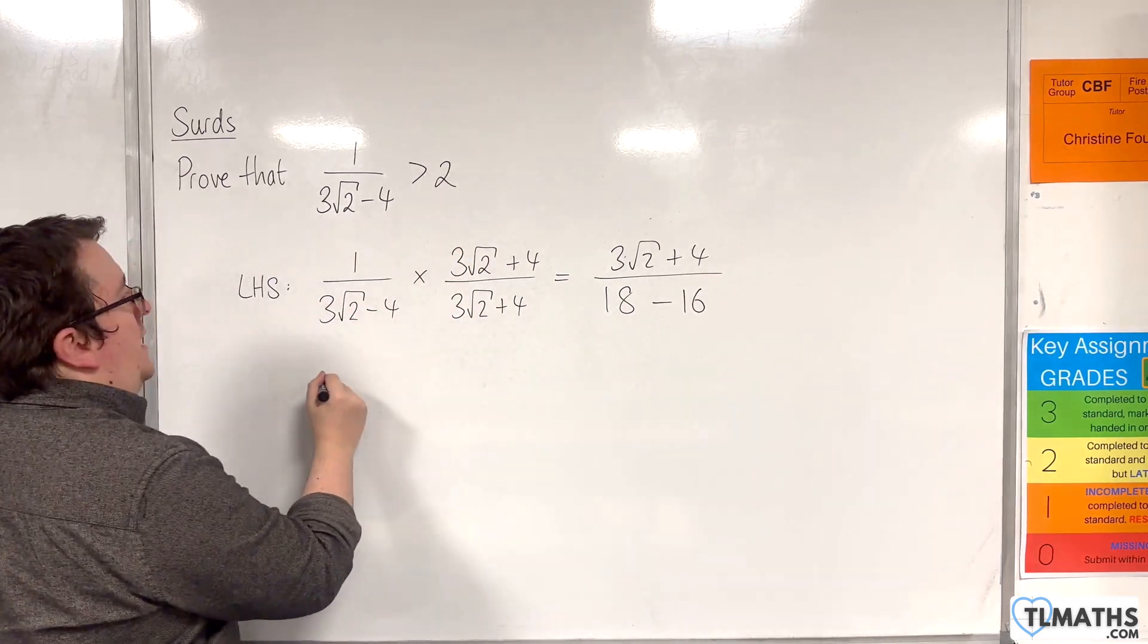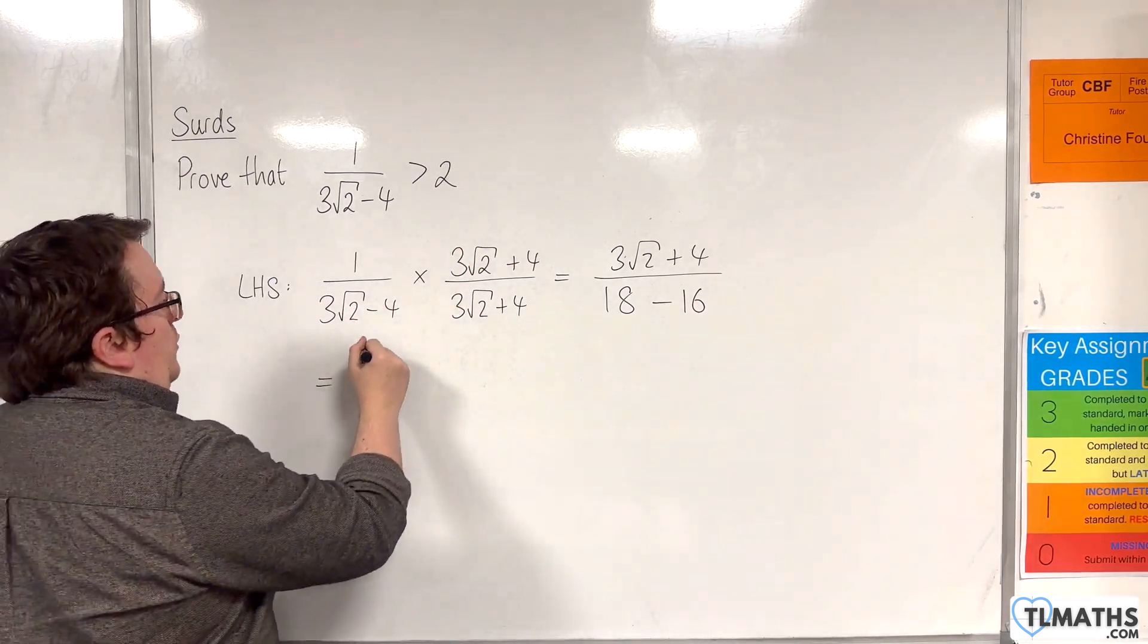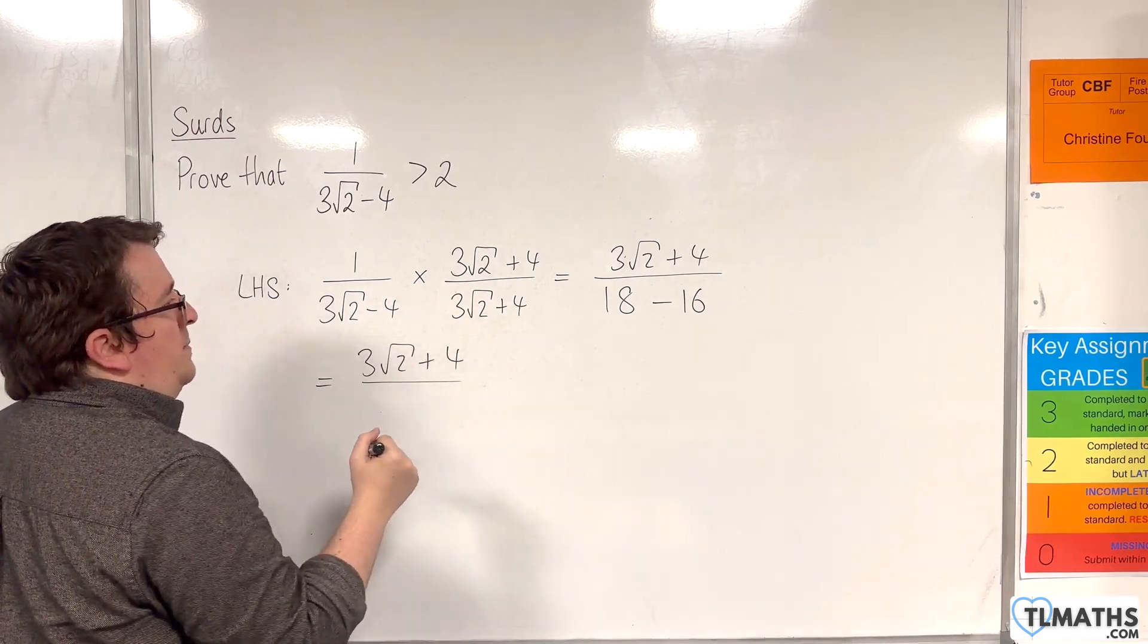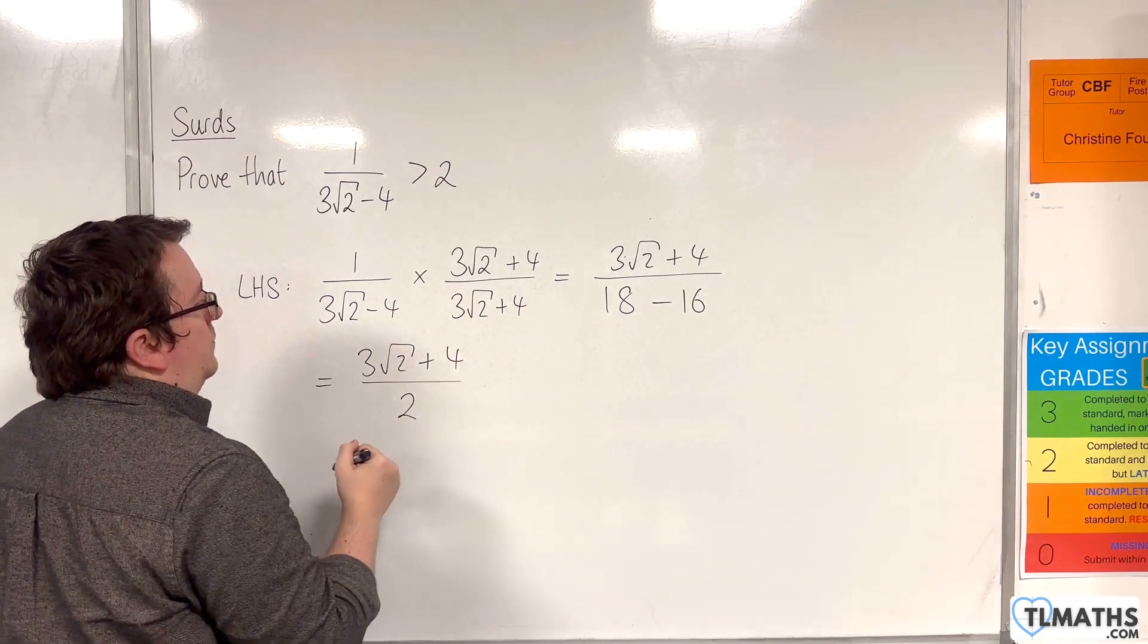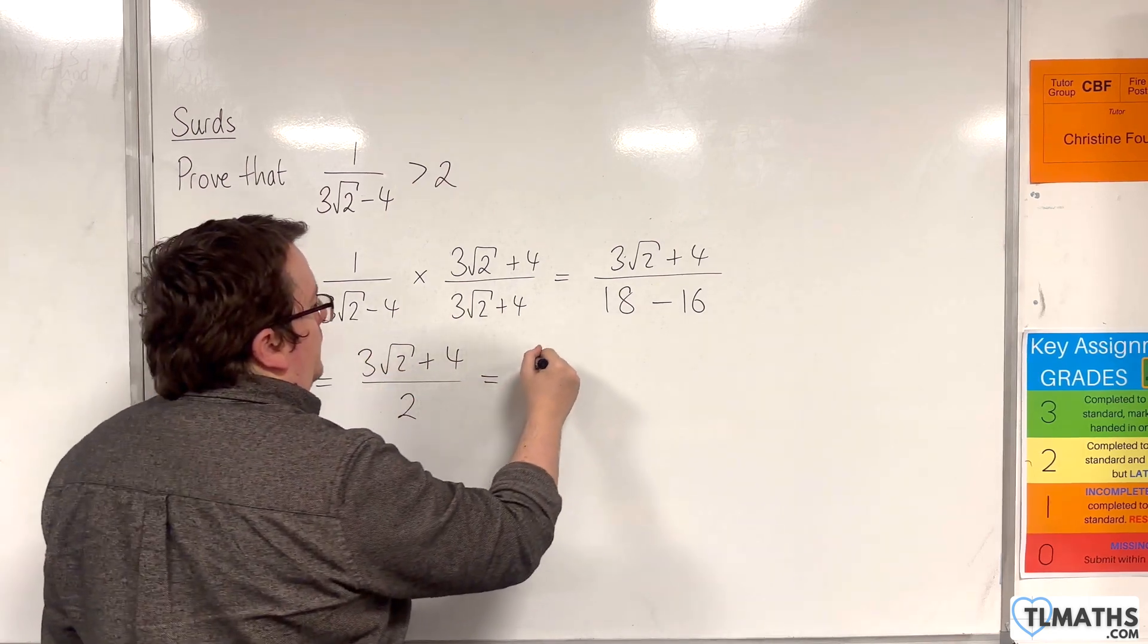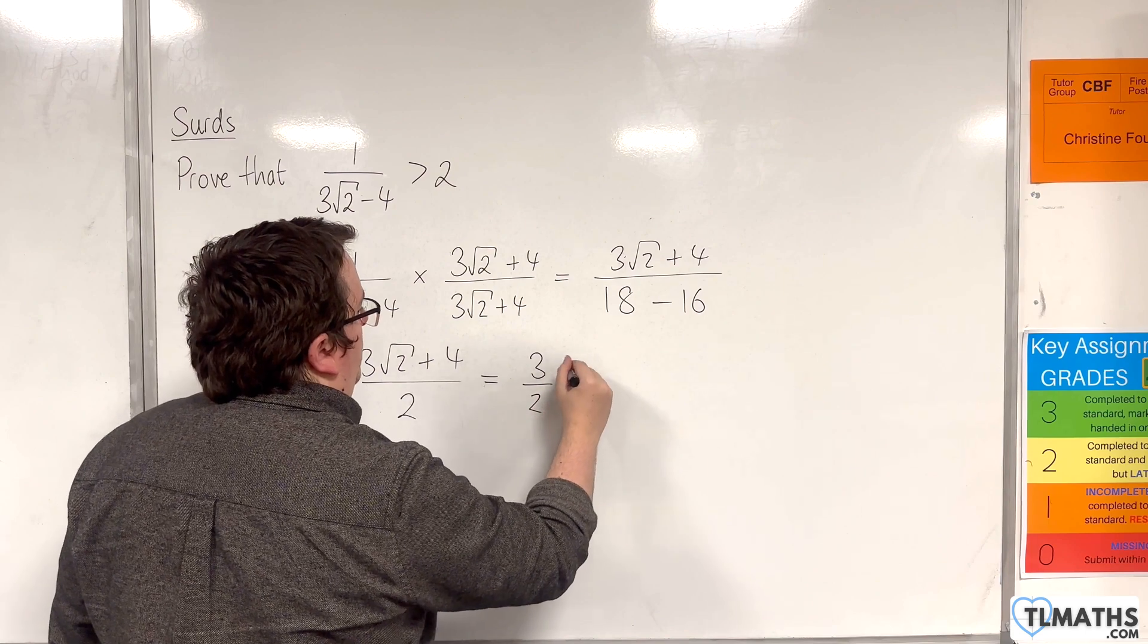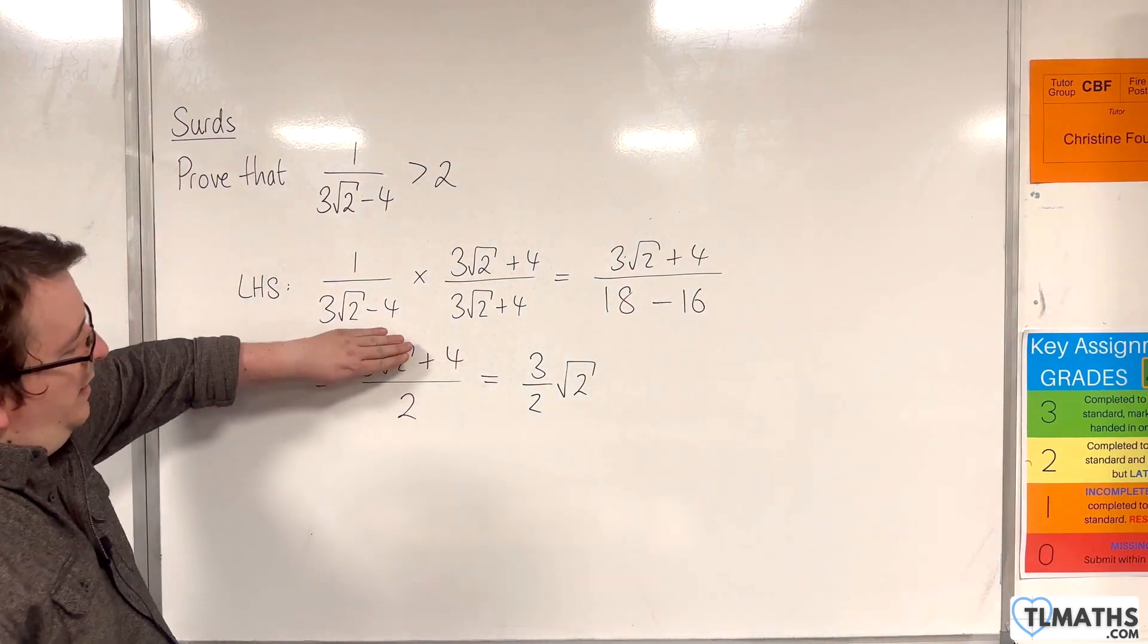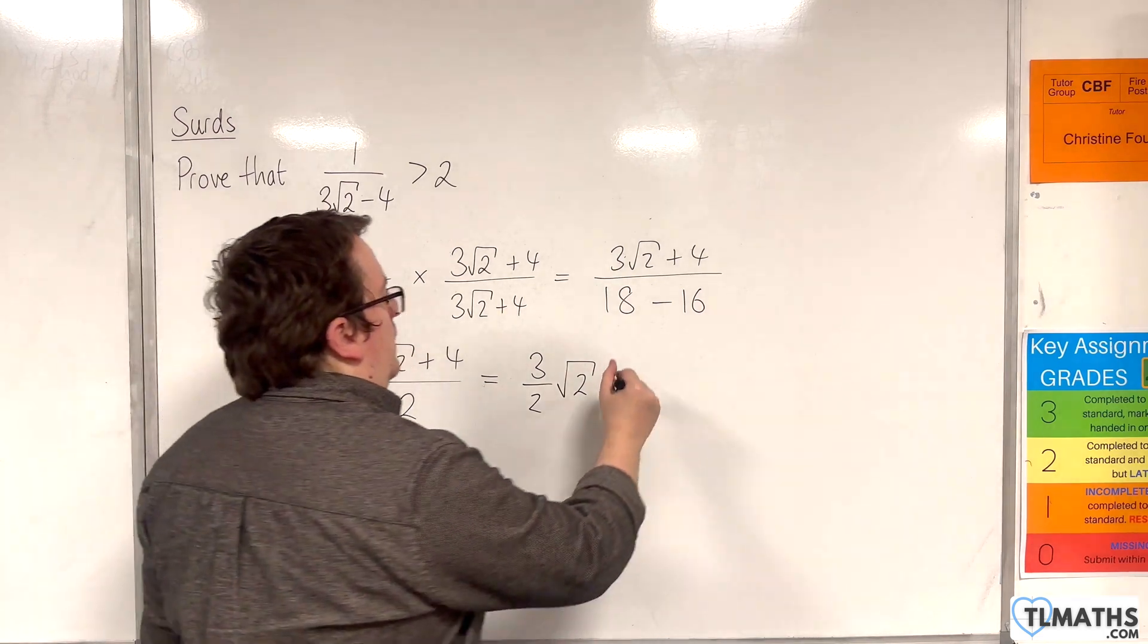So, we have 3 root 2 plus 4 divided by 2. And that is going to be equal to 3 halves root 2. We've got 3 halves root 2, and then we've got plus 4 divided by 2, which is 2.